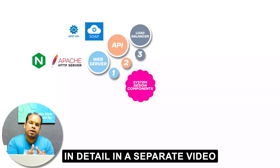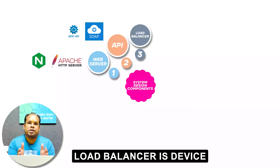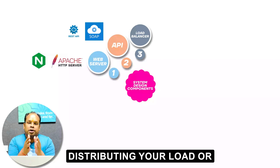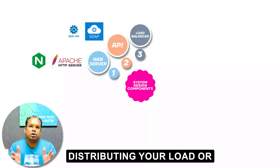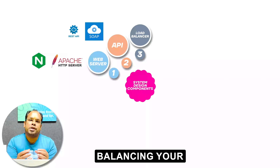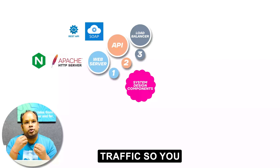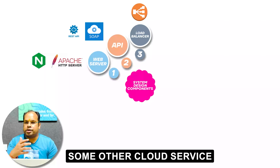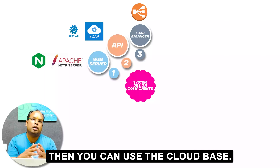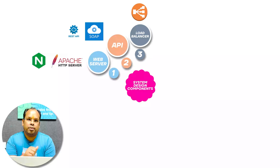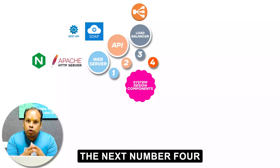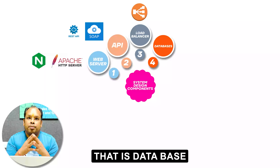The next component is the load balancer — I've already covered this topic in detail in a separate video. A load balancer is essentially a device that helps in distributing your load or balancing your traffic. You can use AWS CLB, or if you are using some other cloud service, you can use another cloud-based load balancer.